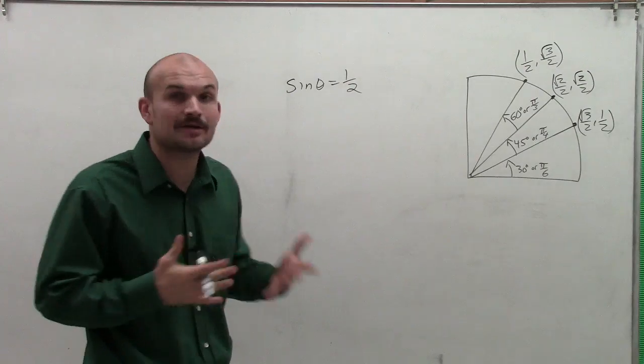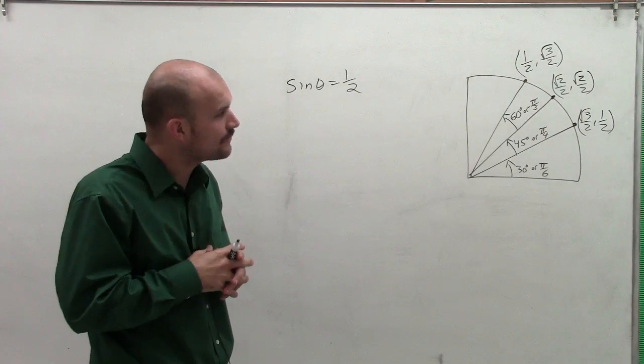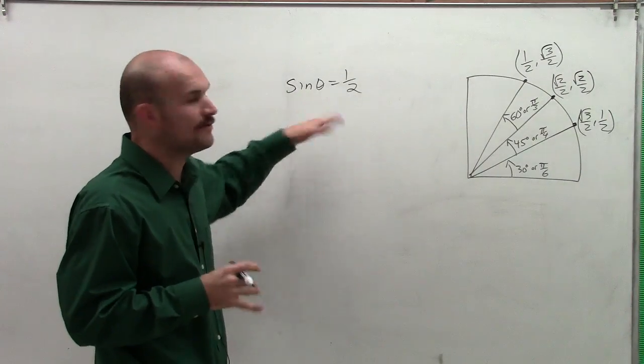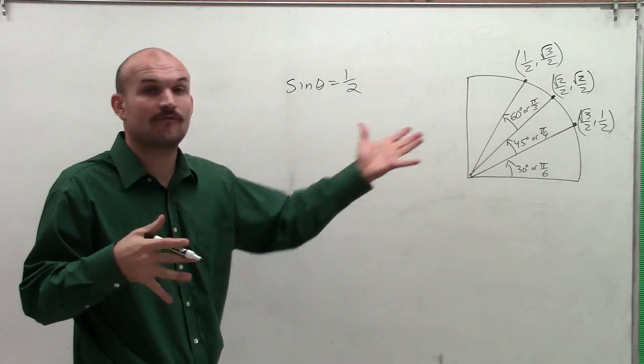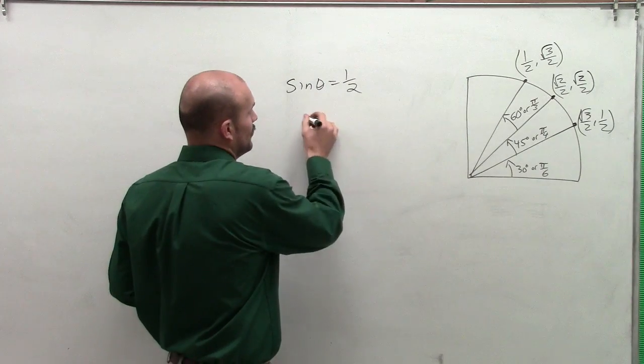So welcome. Here I have the sine of theta equals one half. So what I'm going to want to do for this problem is I need to understand what exactly sine represents for my unit circle, or for a point on the unit circle.